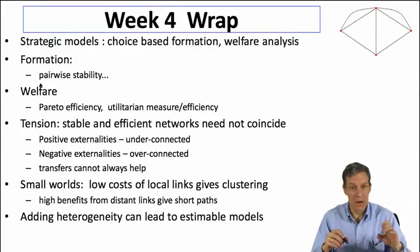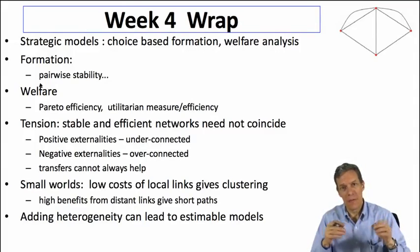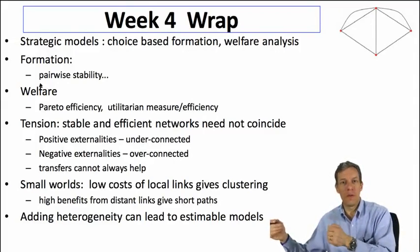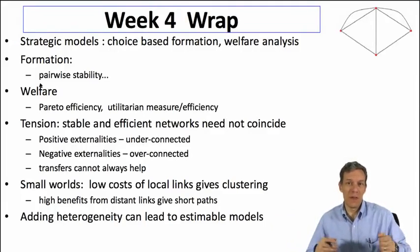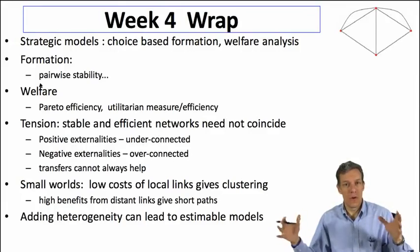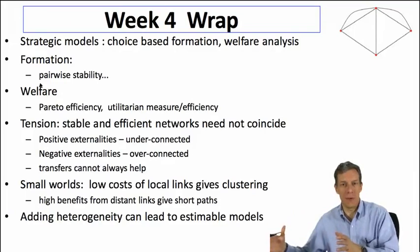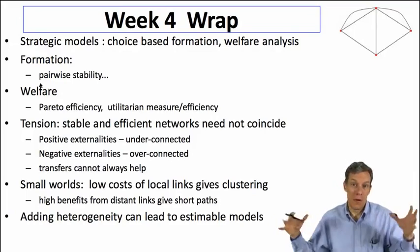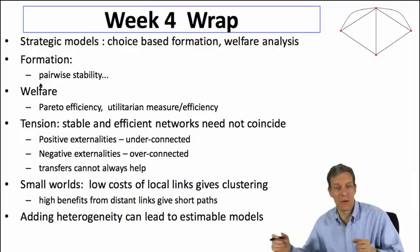We looked at different concepts here. In terms of formation, we looked at what's known as pairwise stability, where nodes form links if they're mutually beneficial. You can sever a link unilaterally if it's not beneficial to you. There are variations on this, but it gives us a prediction of which networks might be stable — rest points of some dynamic process.